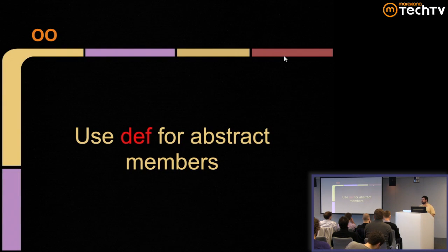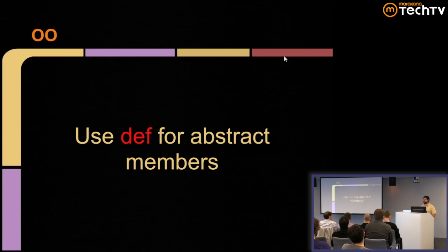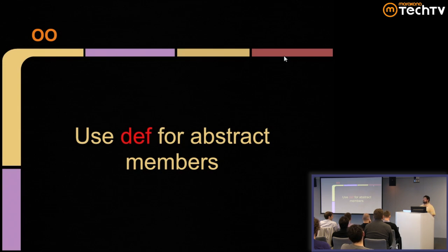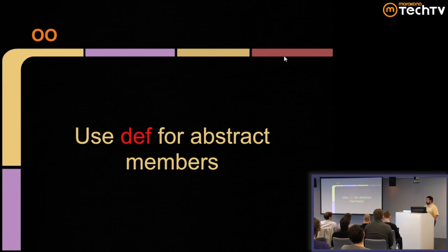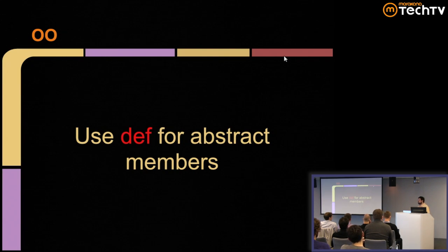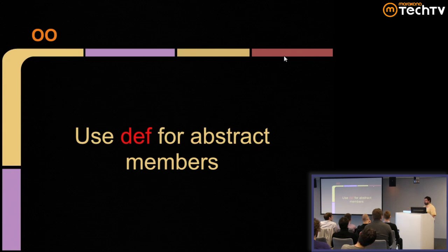Use def for abstract members. Why? Because def can be overridden by val, def can be overridden by lazy val, def can be overridden by var. When making an abstract class, if you don't know or care whether it's a val or var, just use def. Default to using defs in your traits — even if you think it's going to be a value, use a def. Because I can optimize later; it's a decision for my implementer, not for me. Def is good enough for everyone.